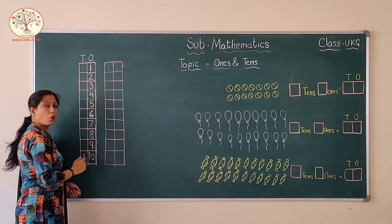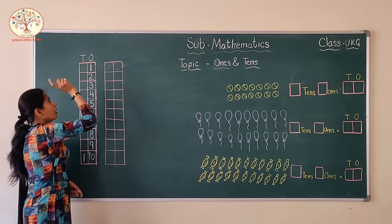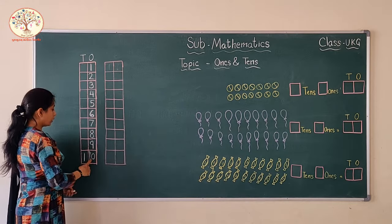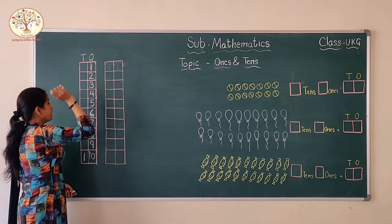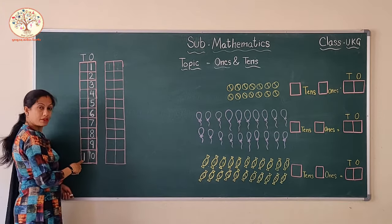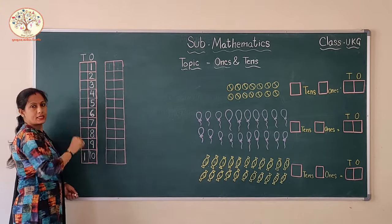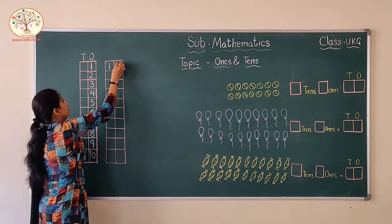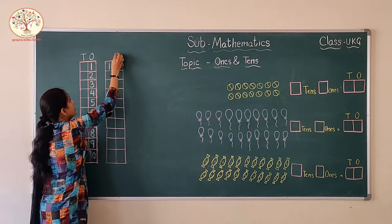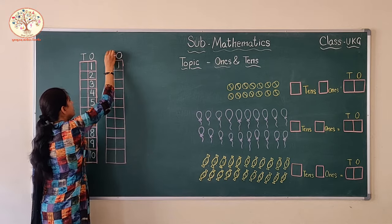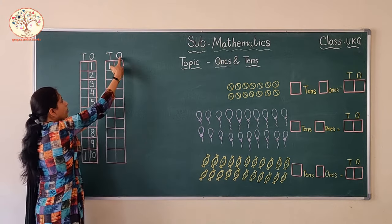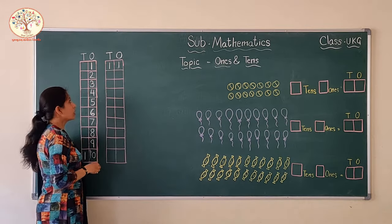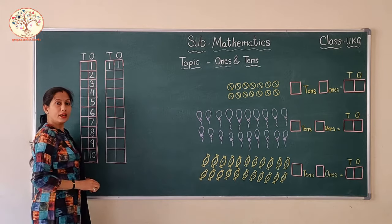1 to 9 — 1-digit numbers — live in the 1s house. For 2-digit numbers, the right-side digit belongs to the 1s family, and the left-side digit belongs to the 10s family. What comes after 10? Yes, 11. This is the 1s house and this is the 10s house. The 1s house has 1 and the 10s house also has 1. So 1 and 1 — 11.